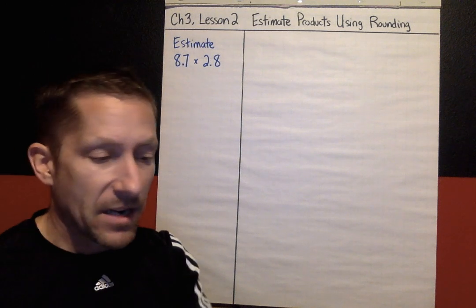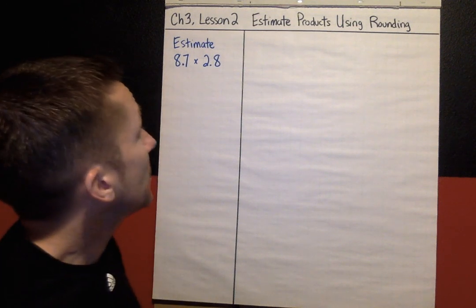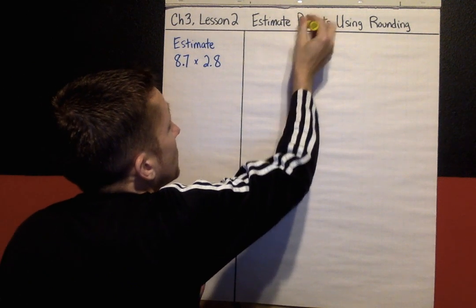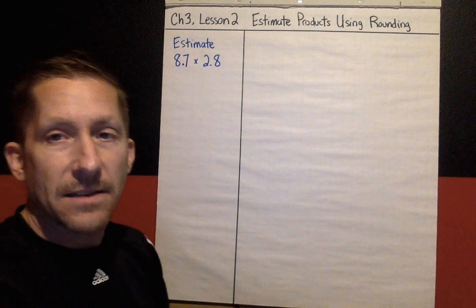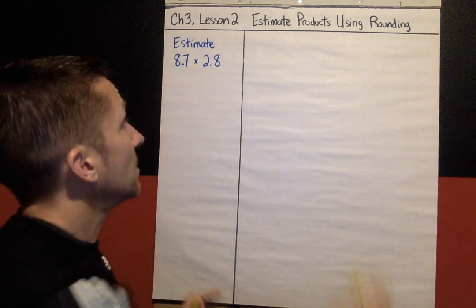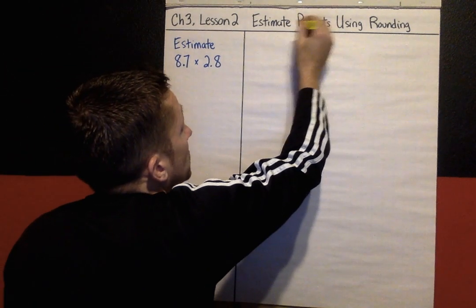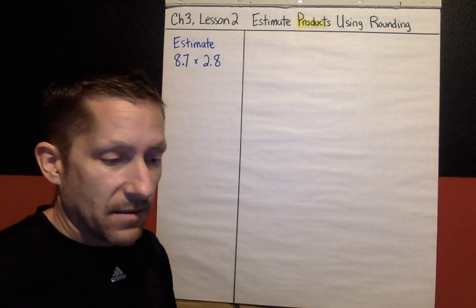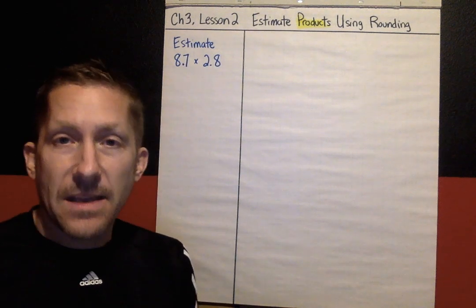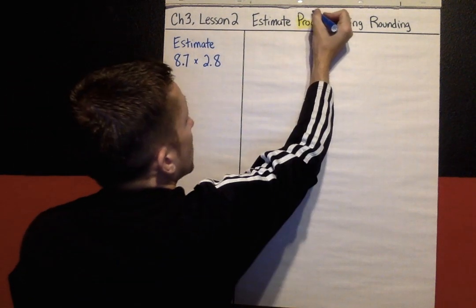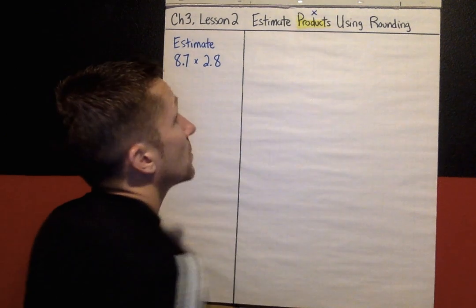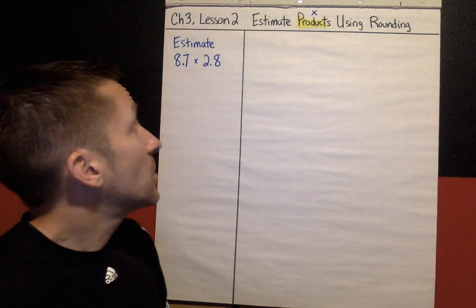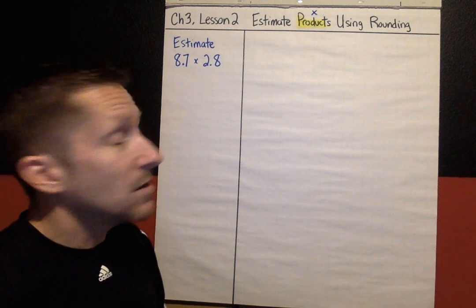Right away in that target, I see that estimating means I'm not going to be finding exact answers — an estimate is not the exact answer, it's close. I also see a keyword here: product. That product means we are going to be multiplying. When you see the word product, that's the answer to a multiplying problem. So we're going to be estimating products using rounding.